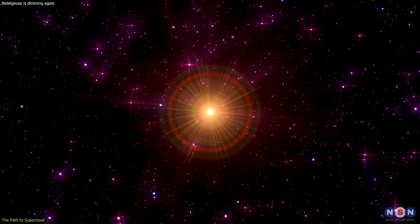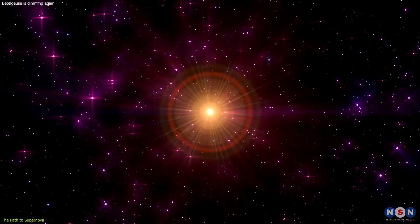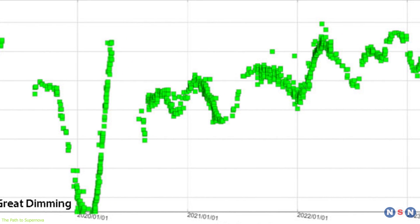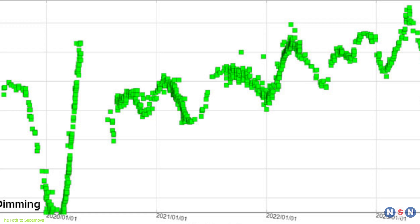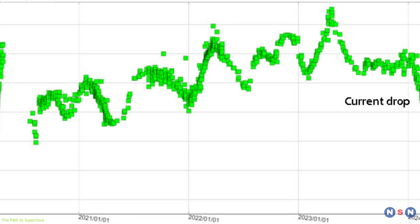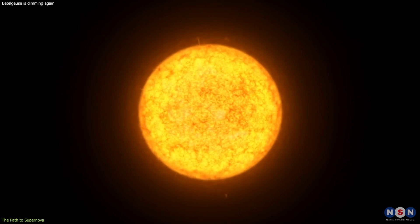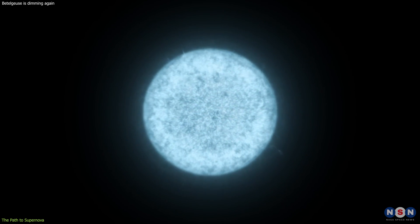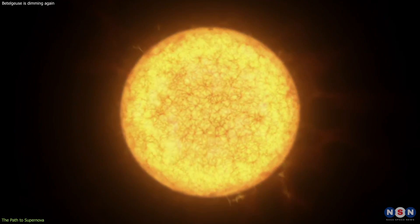By examining the star's brightness fluctuations over the past century, researchers have identified changes over periods of 2,200 days, 420 days, 230 days, and 185 days. Traditionally, the 420-day cycle has been considered the primary pulsation with the shorter cycles viewed as overtones.